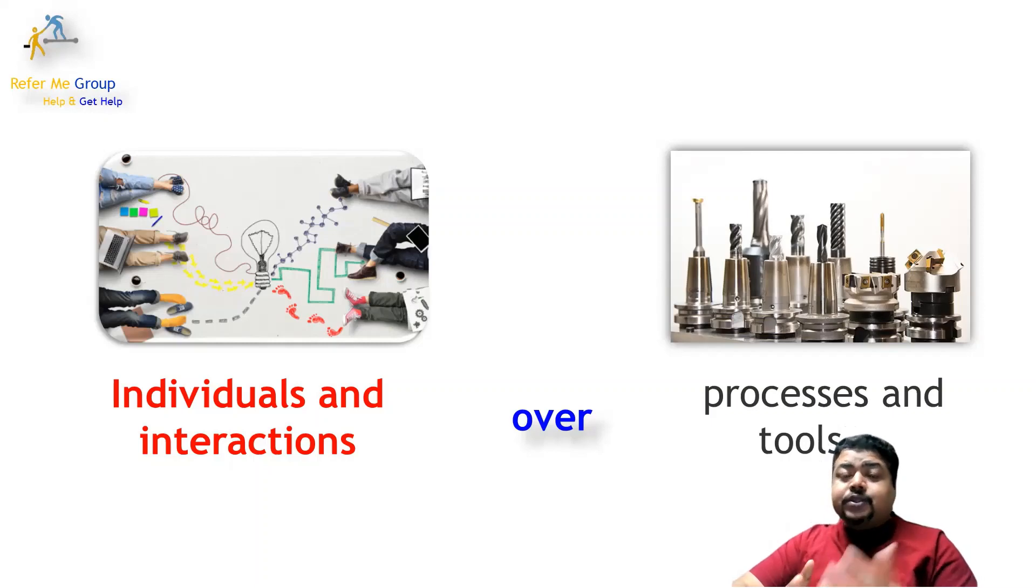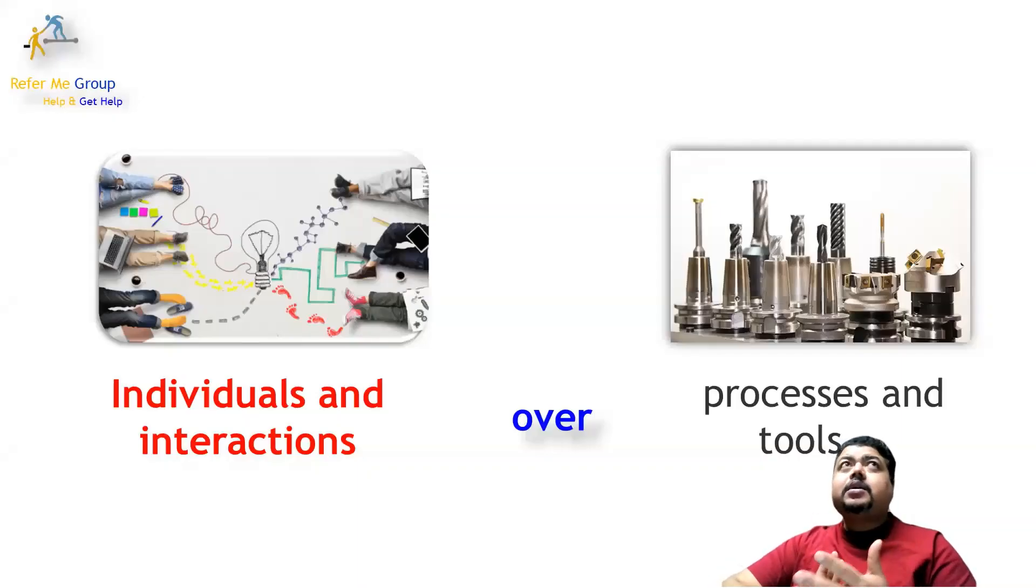We will talk about the Agile values and principles. In the next few videos, I will try to explain as much as I can about the Agile values. Basically, first we will discuss the values, and then we will discuss the manifesto. If we are talking about these things, it will be easy for you to understand and make your concepts clear. Let's talk about the first one.